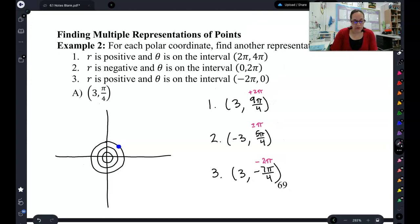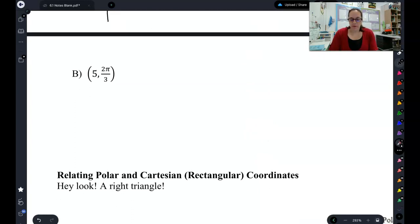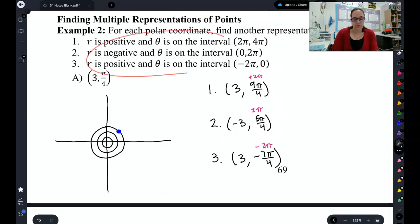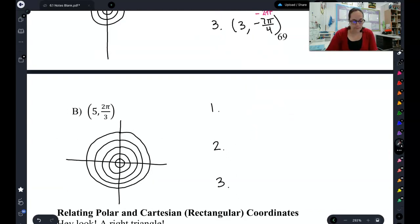So there's a couple examples where we took this one blue point and we wrote it in a lot of different ways. There's a lot of different ways you can write a single point in polar coordinates. Now it's your turn. For B, I want you to start by graphing where the point is. We've got a radius of 5 this time. So plot the point and then follow the instructions to satisfy these three things, but for this new point. So pause the video, try that out, and then come back to check your work.